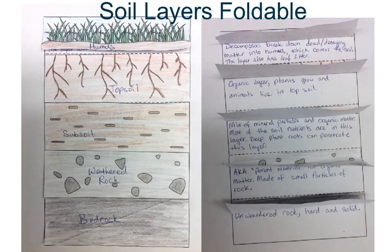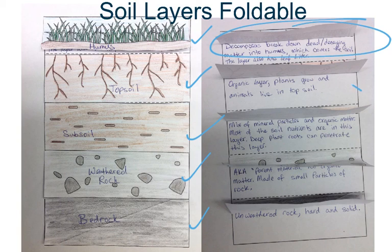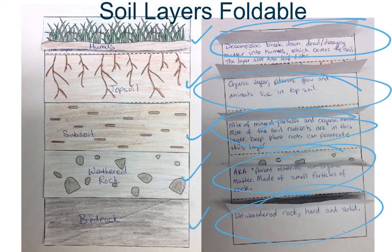This is what your final product should look like. We should see our humus, topsoil, subsoil, weathered rock, and bedrock. And when we pull the flaps up, we should easily be able to see each and every definition. So make sure that your foldables look exactly like this.